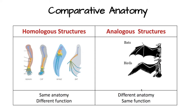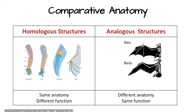And three, comparative anatomy — when scientists compare the bodies and the functions of different animals to learn about their ancestors. We learned about homologous structures, which have the same anatomy or the same bone structures but different functions. For example, humans use their hands very differently than a cat uses their hands.